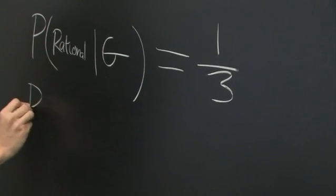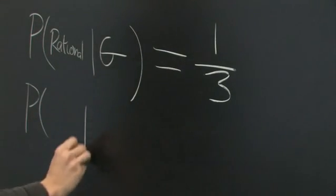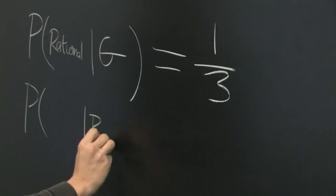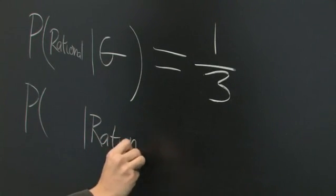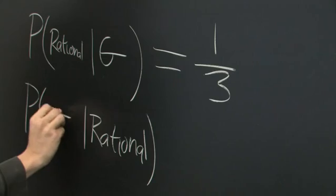Let's look at it the other way. What if we already know that a ball is rational? What is the probability that it's green?